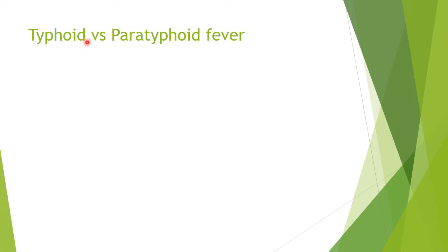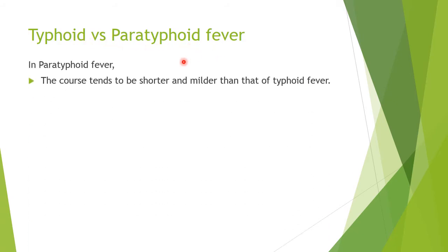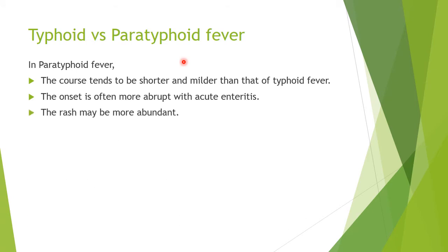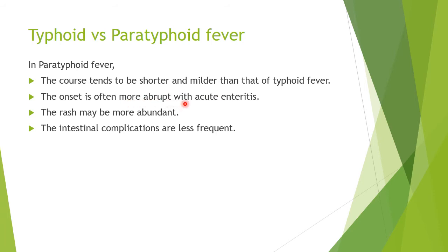What is the difference between typhoid and paratyphoid fever? In paratyphoid fever, the course tends to be shorter and milder than typhoid fever. The onset is more abrupt with acute enteritis. The rash may become more abundant. The intestinal complications are less frequent. So in paratyphoid fever, symptoms are relatively less, the course is shorter and milder, onset is abrupt, rashes are abundant, but complications are less frequent.